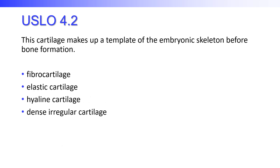This cartilage makes up a template of the embryonic skeleton before bone actually forms — what starts as our skeleton before it calcifies. Is it fibrocartilage, elastic cartilage, or hyaline cartilage? The correct answer is hyaline cartilage, which also remains on our skeleton as the surface of the ends of long bones and plays a role in highly movable joints.